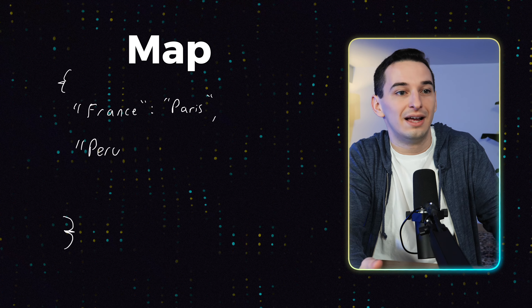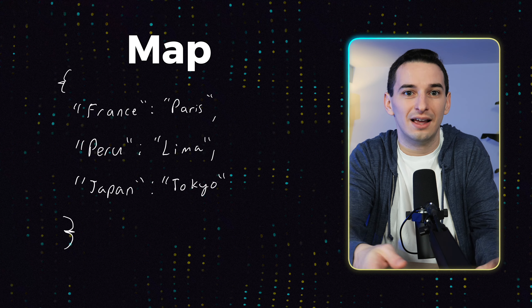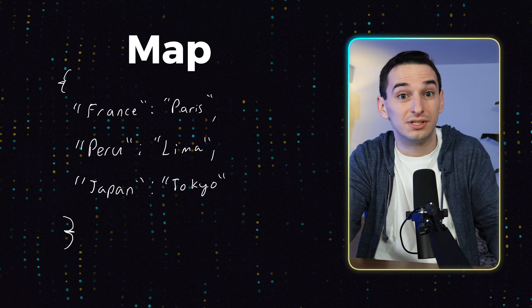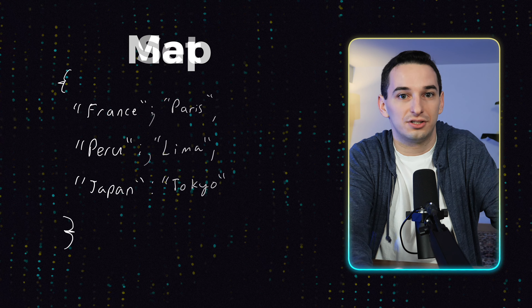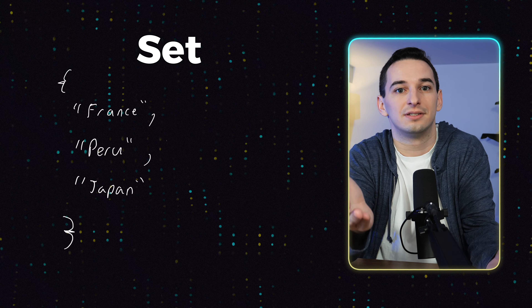Next I'd look at maps, or dictionaries as they're sometimes called, as well as sets. A dictionary works similar to a dictionary in real life — it's simply key-value pairs. In a real dictionary, the keys are the words and the values are their definitions, and the same is essentially true in code, except that we can use whatever keys and values we want. The key component to most dictionaries is simply that the keys need to be unique. Sets are interesting because essentially they're just a special case of maps — they are maps that just don't have values. Some implementations of sets are simply maps where all of the values are automatically set to null. Essentially, a set is just a group of elements where there can't be any duplicates.